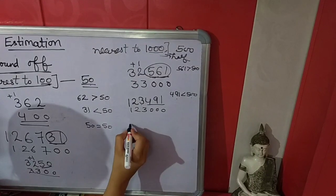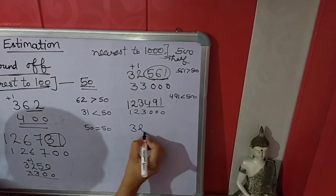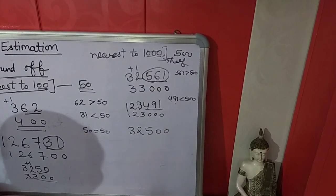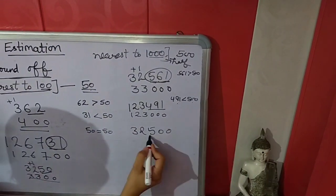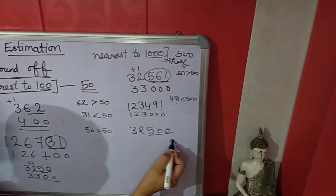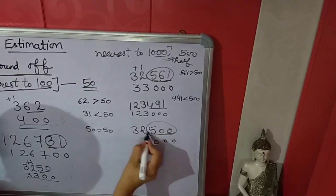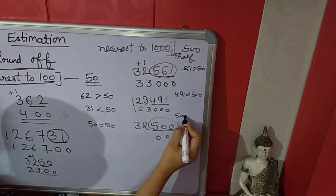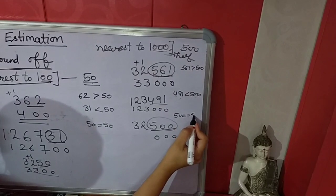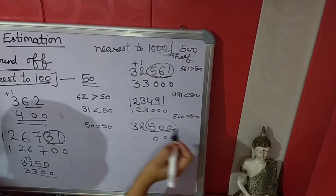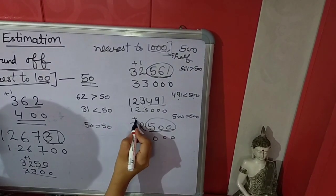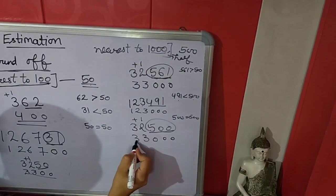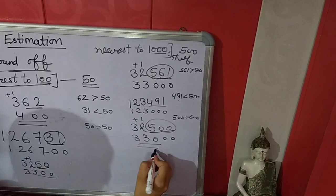Last example: we have to convert the last 3 numbers into zeros. Now we compare 500 to 500 — they are equal. So we will add 1. The answer is 33000.